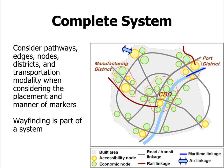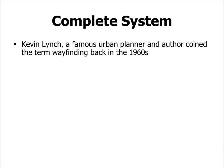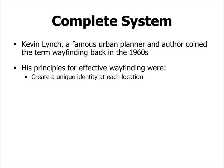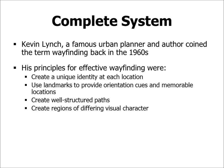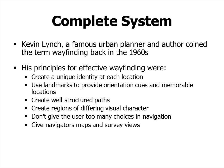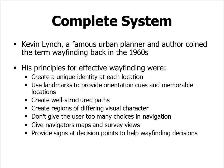Wayfinding is part of a complete system. Kevin Lynch, a famous urban planner and author, coined the term wayfinding in the 1960s. His principles for effective wayfinding were: create a unique identity at each location, use landmarks for orientation, create well-structured paths and regions of differing visual character, don't give users too many navigation choices, provide maps and survey views, provide signs at decision points, and use sight lines to show what's ahead.